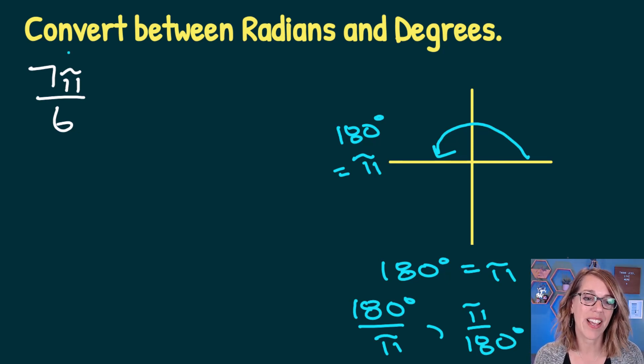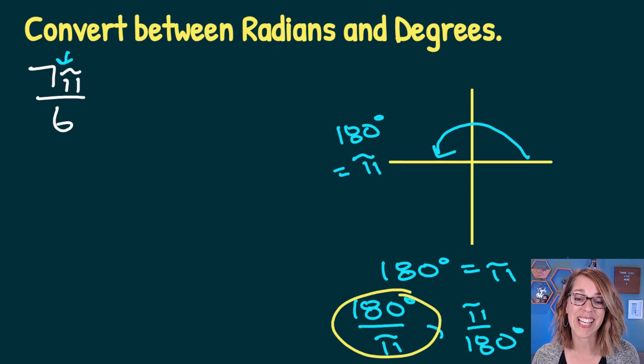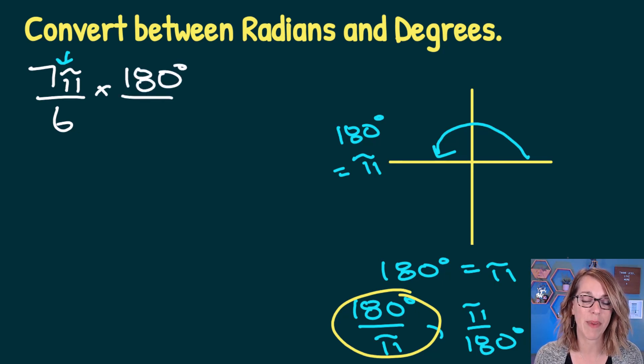Well, in this case, I've got π here in my numerator. I really want to cancel π. So that means that I'm going to use the conversion factor of 180 divided by π. Let's go ahead and multiply that in. So I'm going to multiply 180 degrees divided by π.